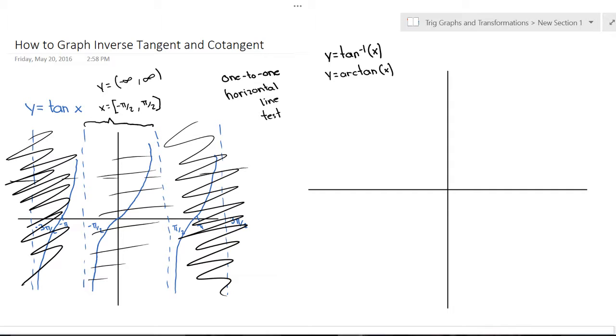Now you know when we take an inverse function, you swap x's and y's. So now, if y was negative infinity all the way to positive infinity, now x, the domain, is going to range from negative infinity all the way to infinity.